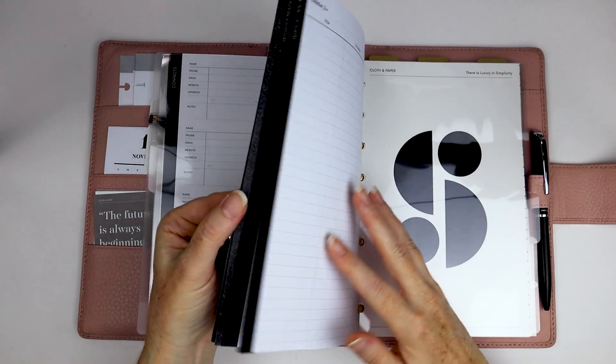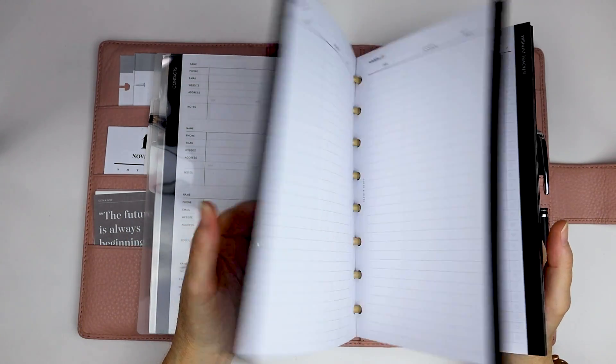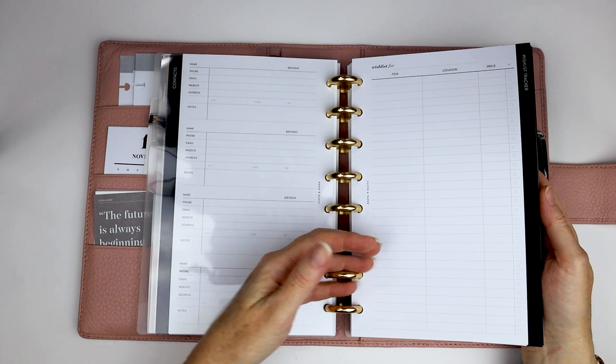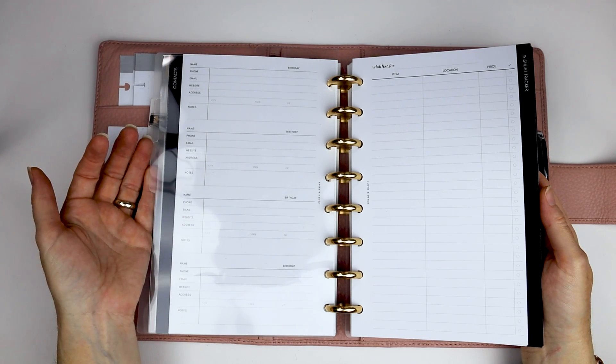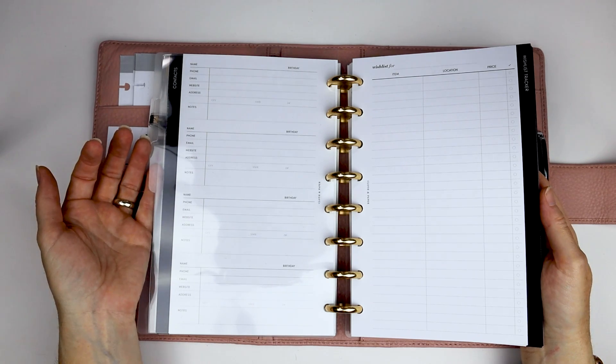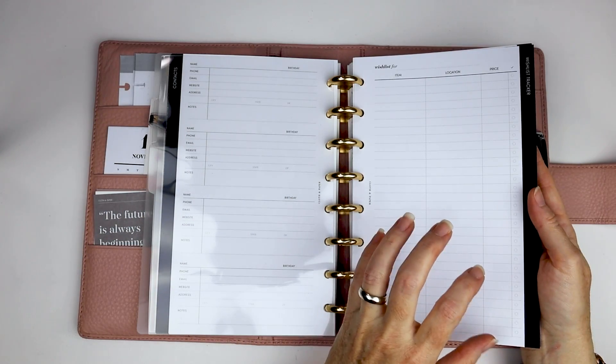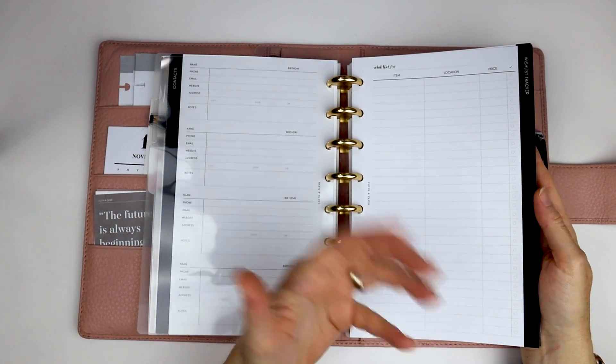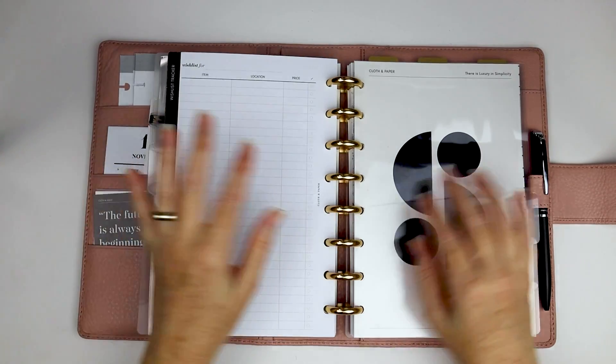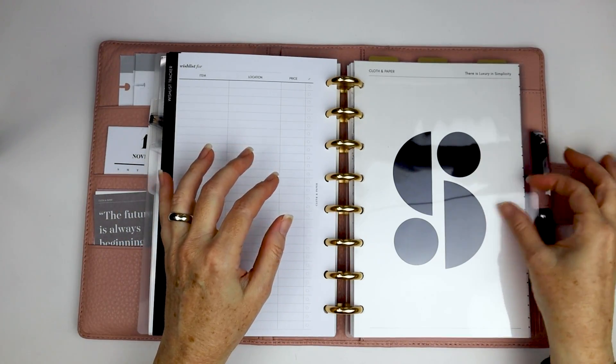I do have also the cloth and paper wish list tracker. So again, this might be something I use for my home. I have some information in here, but that's aimed more at the house itself. When I'm looking for something, this is more for, you know, wish list for the kitchen. If there's stuff that we need to buy, that sort of thing.